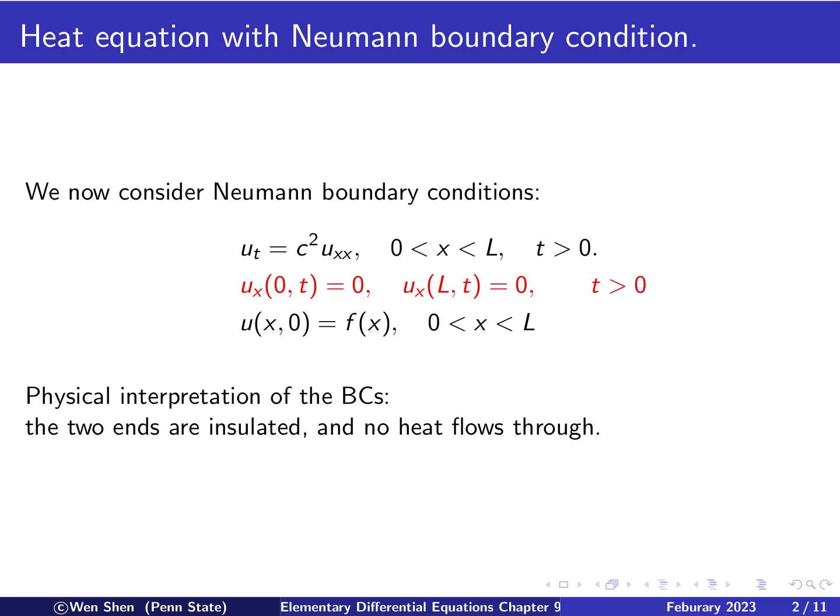So we know that the heat will flow in the direction of the gradient of the temperature. If the gradient is 0 at those two points, then this basically means no heat will flow through there.